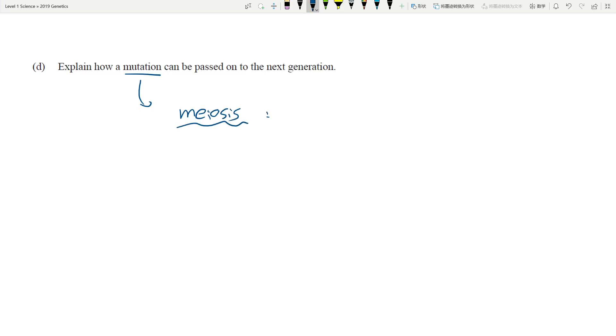If that particular sex cell then ends up fertilizing another sex cell that creates a new individual, then the mutation is passed on. You can only pass it on if the mutation occurs during meiosis.